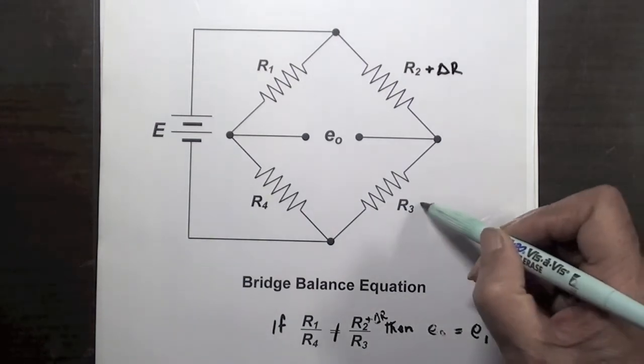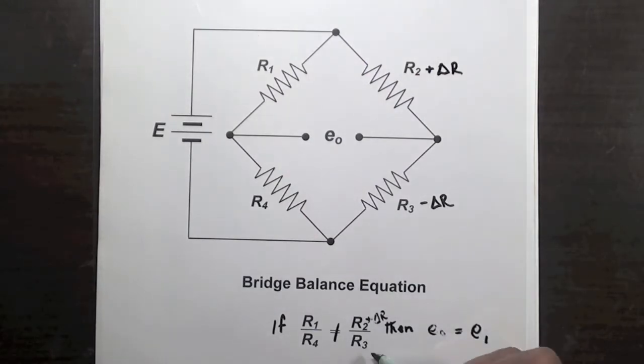Now if the resistance in an adjacent arm decreases by the same amount, then the unbalance in the bridge is doubled and E output will have a value of 2 times E1. Since half the bridge has changed resistance, this is a half bridge configuration.